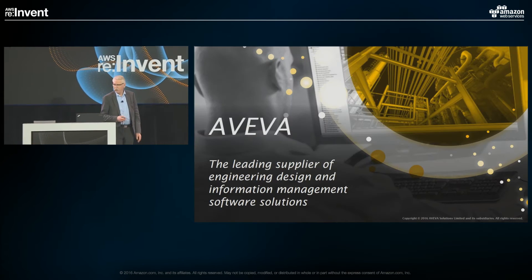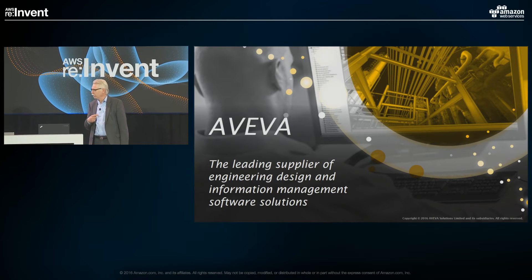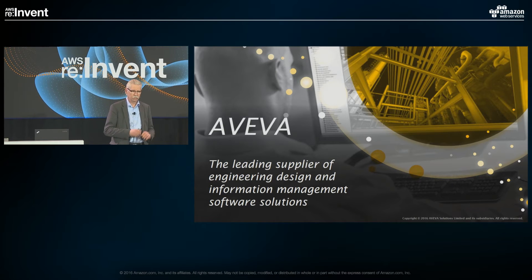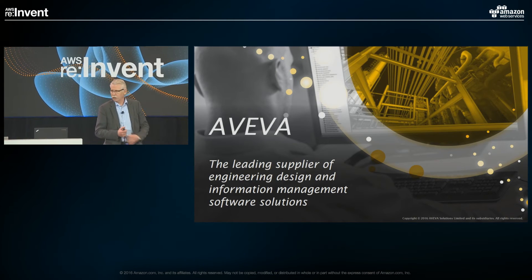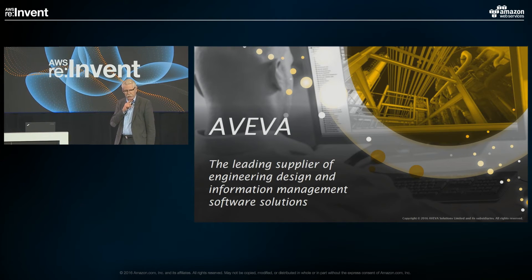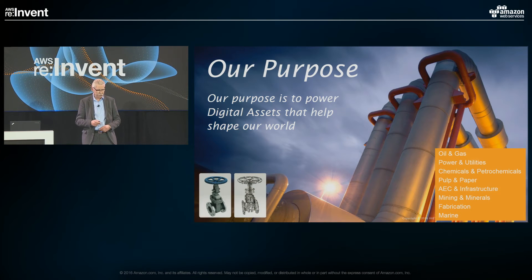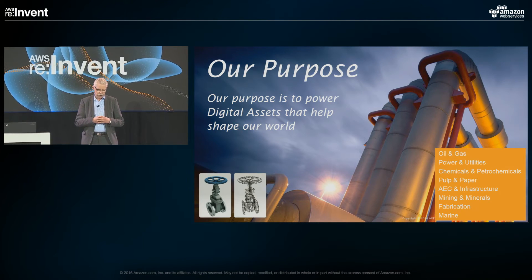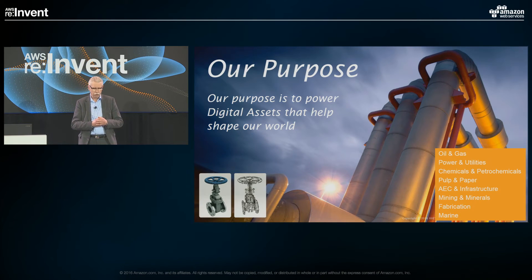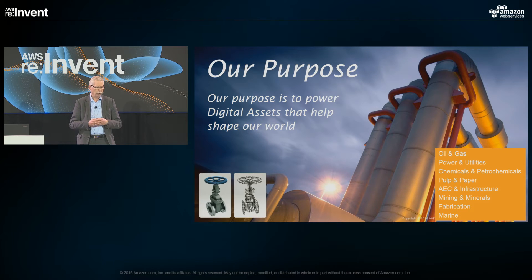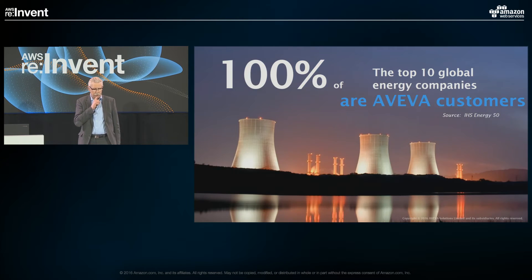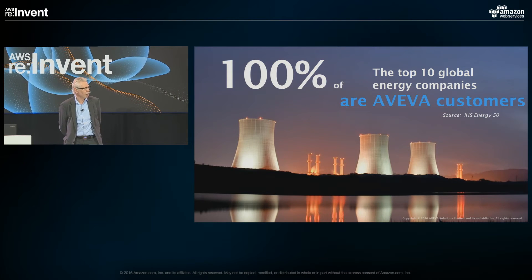Hello everyone. I'm super excited to be here — that's very strange for a Swede to say, because when something is super exciting, we just say it's good. I work for Aviva. We are a leading supplier of engineering design and information management software solutions. We're trying to power the digital asset — what we call the digital twin: the digital version of an asset like a power plant, a tension leg platform, or a ship. We work in several verticals including oil and gas, marine, and pulp and paper. We are quite significant in this area.